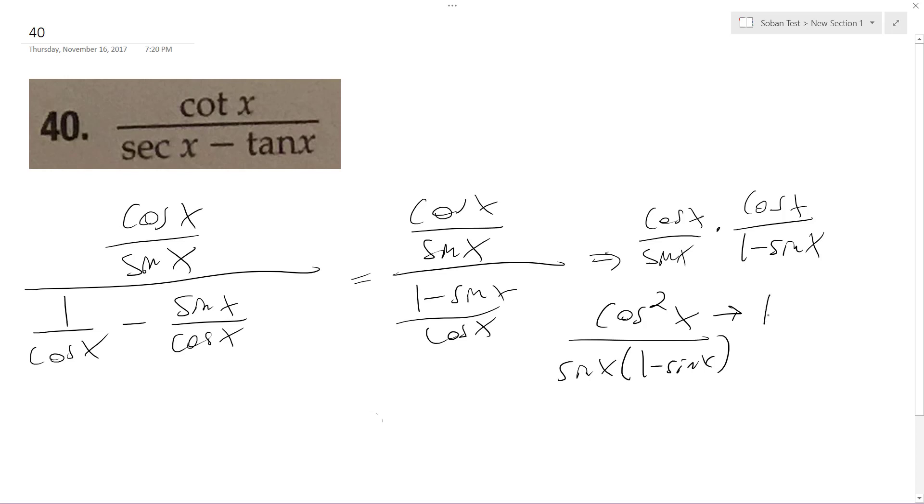the top numerator becomes 1 minus sine squared x from trig properties, so I get 1 minus sine of x, 1 plus sine of x, over sine of x, 1 minus sine of x,